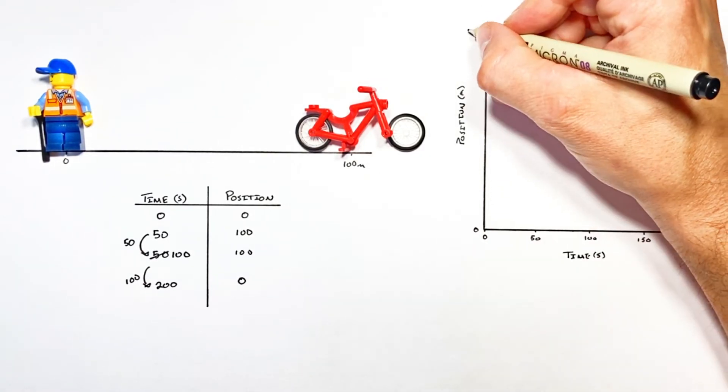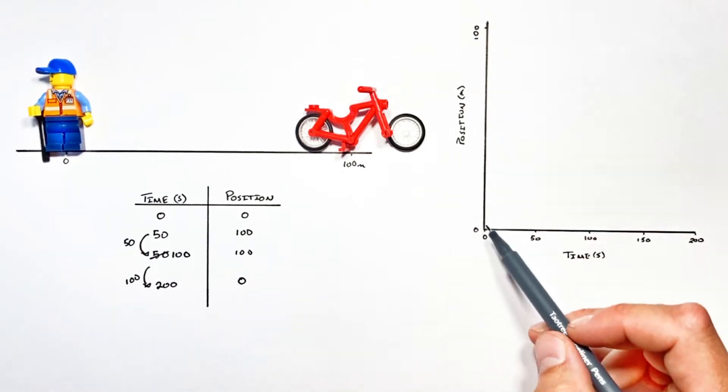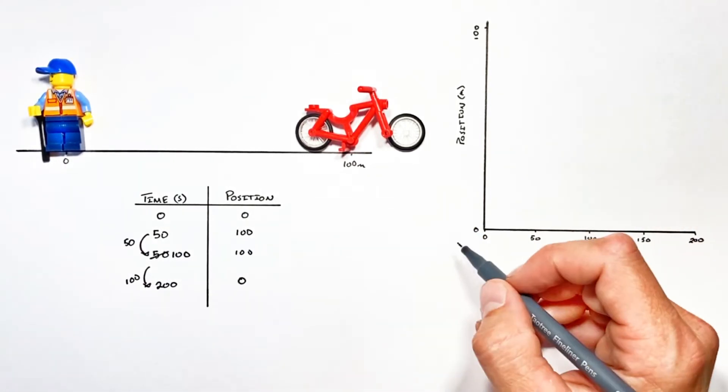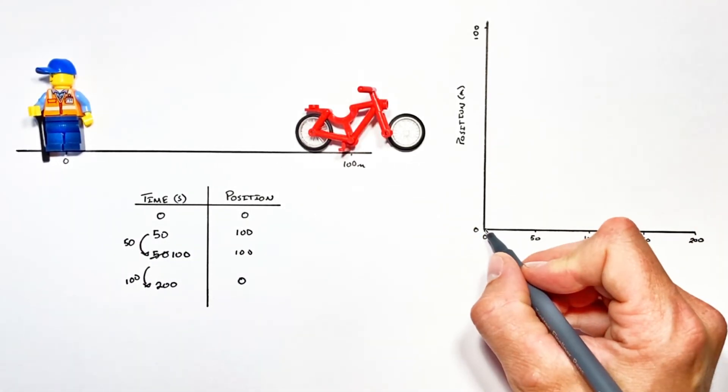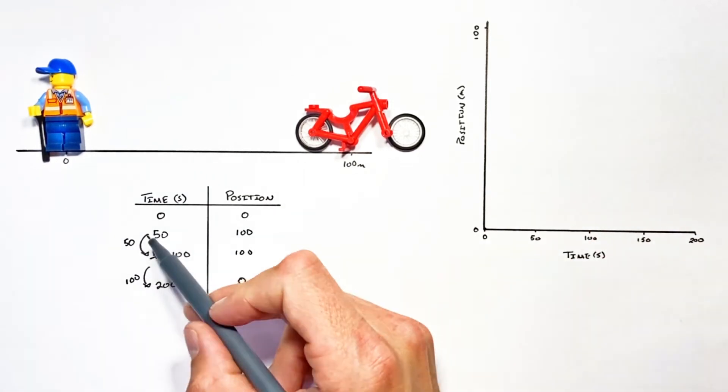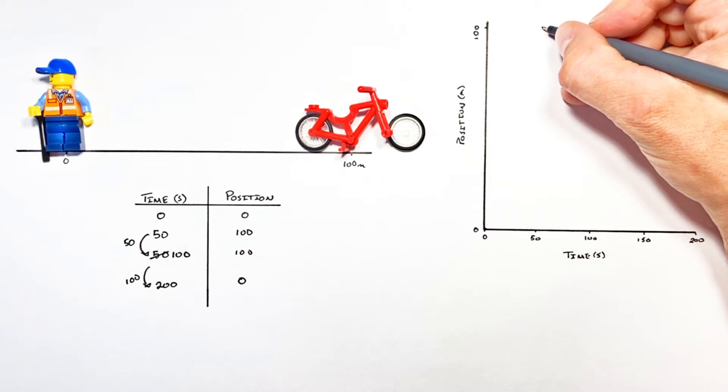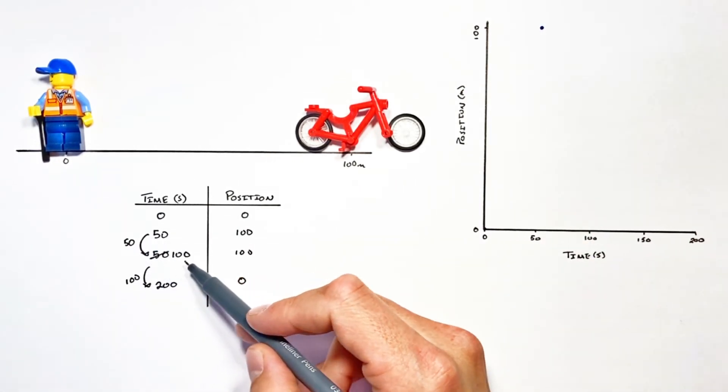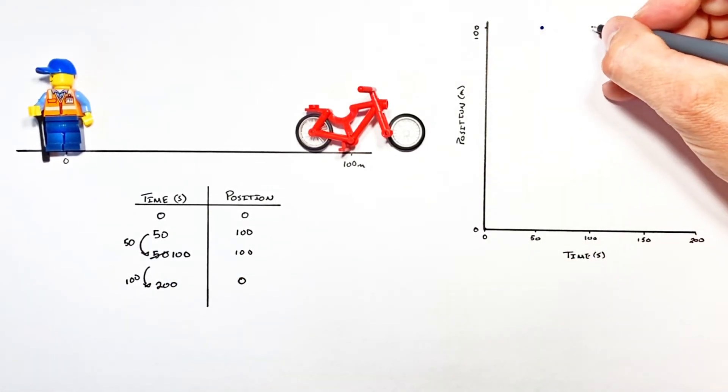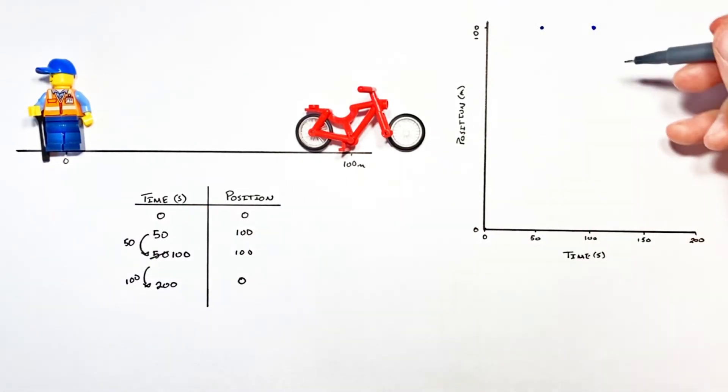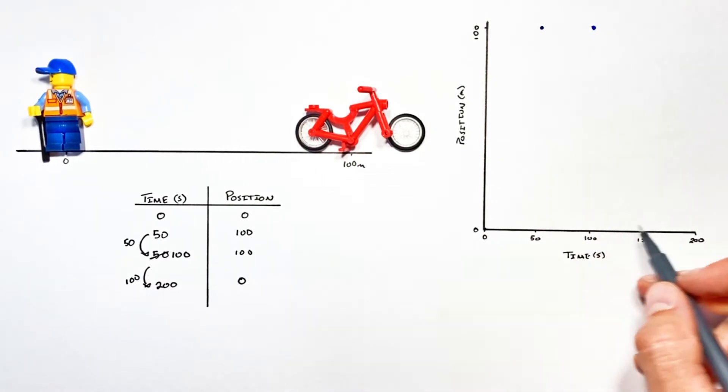Now that we have the outline of a graph made we're just gonna plot our four different data points on that graph. So the first data point is just the origin here. The next data point is 50 seconds in at a position of 100. And 50 seconds later at a time of 100 he was still stuck working on his bike. And then he had to walk all the way back to where he began. That took 100 seconds so after 200 seconds total he's back where he began.